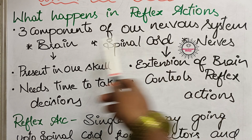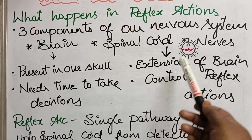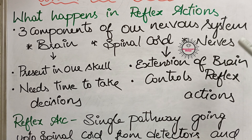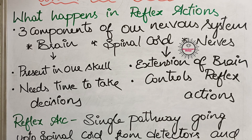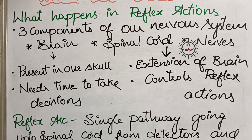Nerves carry information to the brain and spinal cord, and bring responses from the brain and spinal cord back to the organs. So our nervous system has three components — brain, spinal cord, and nerves — where the brain is the main component taking decisions, but reflex actions are controlled by the spinal cord.